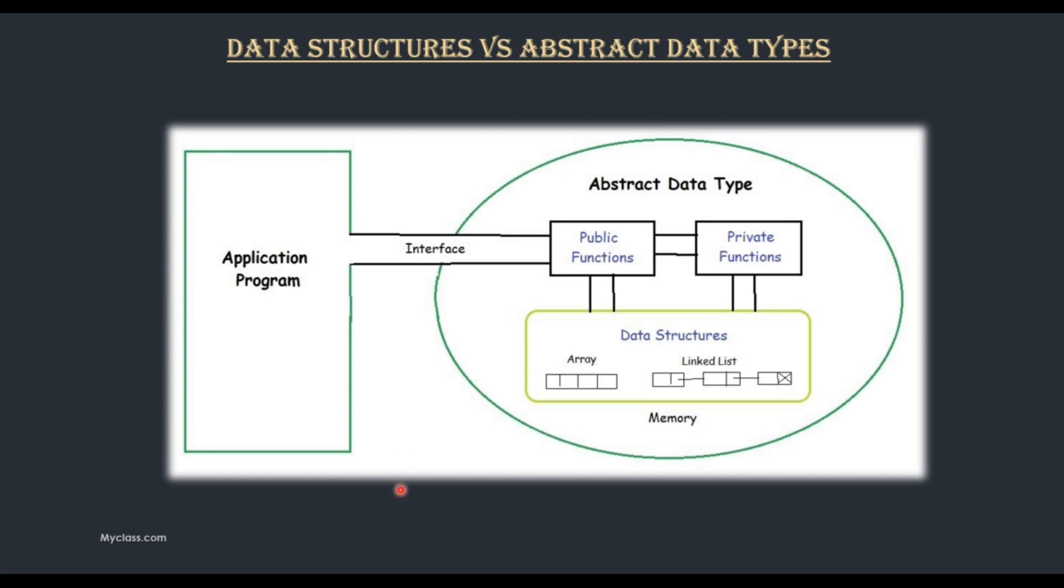This is the image of an abstract data type. Application program is always connected to or always communicates with abstract data type. The abstract data type includes the data structures that are suitable for this application program in the memory and also the public functions and the private functions that are performing the different operations on this data structure.